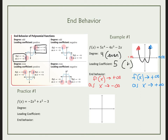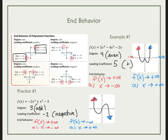Pause the video and try practice number 1 on your own. Check your work: because it's odd and negative, the graph matches this shape. On the left side, the function is approaching positive infinity as x approaches negative infinity. On the right side, the function is approaching negative infinity — going down forever — as x approaches positive infinity.